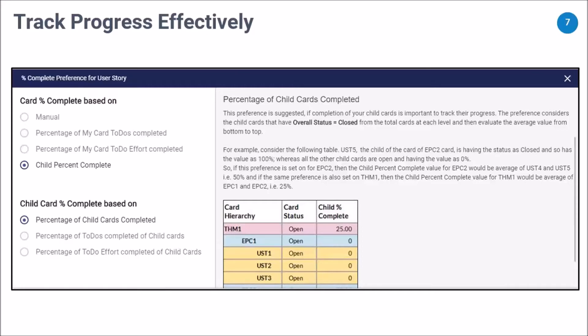If you want free-hand control over how to update the progress, we have also provided a manual option. This option allows you to track the card's percent complete as well as the child card's percent complete independently. For example, you may want your theme's percent progress updated manually, but as a reference, you'd like to know how many epics have been completed. So child percent complete is based on child cards completed, while you have the final say on how much work is conveyed as completed for that theme.